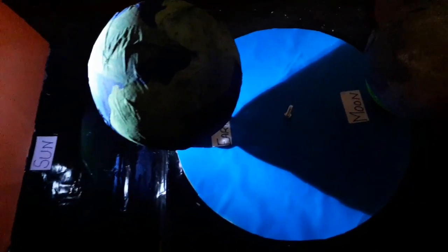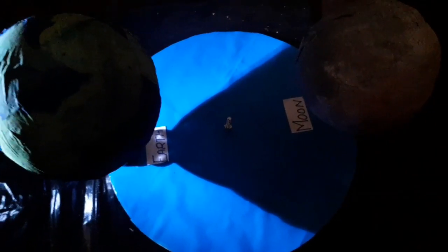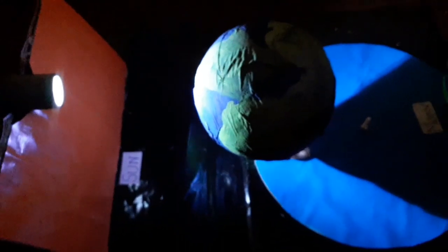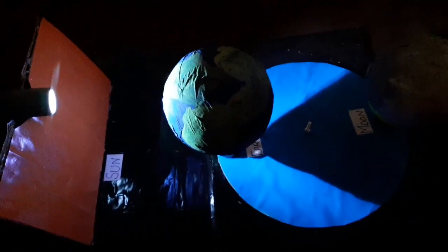In other words we can say that earth's shadow falls on moon and we can't see moon. This is called lunar eclipse. As you can see on the screen.